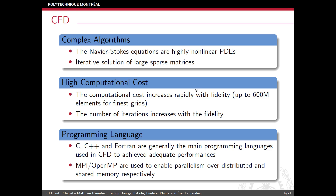This is the reason why the programming language plays a critical role in the field of CFD — we need to achieve high performance to provide practical applications. C, C++, and Fortran are generally the main programming languages in CFD, using MPI and OpenMP for parallelism.